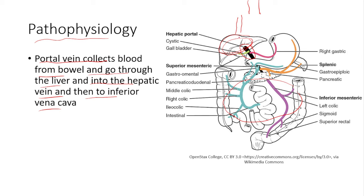For example, liver cirrhosis blocks blood flow, leading to increased pressure to move blood through the liver and into the hepatic vein. The cause may also be pre-hepatic, such as thrombosis of the portal vein, which increases pressure to move blood through it. Post-hepatic causes like thrombosis of the hepatic vein also increase portal venous pressure, leading to portal hypertension.